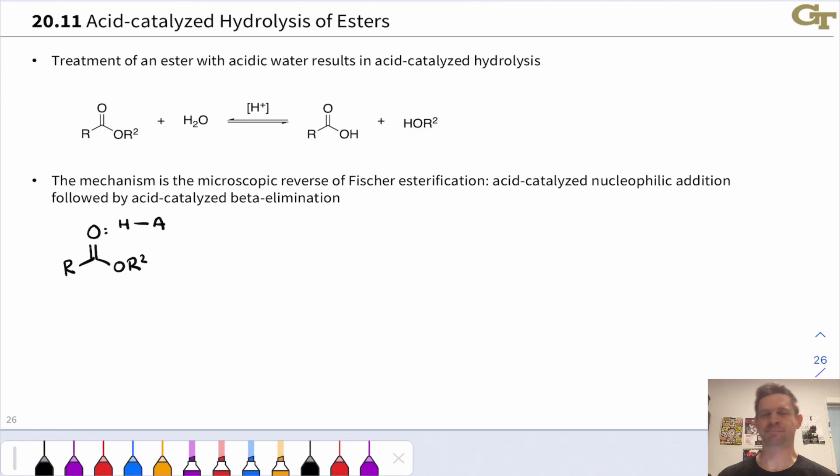If we can make an ester from a carboxylic acid and an alcohol with water as a product, it makes sense that if we use an excess of water and an acid catalyst, we should be able to convert an ester back to the carboxylic acid. This is the idea behind the acid-catalyzed hydrolysis of esters. This reaction is essentially the microscopic reverse of Fischer esterification. It involves all the same elementary steps but occurring in reverse, with reverse electron flow. Notice here that rather than starting with the carboxylic acid and an excess of alcohol, we're starting with an ester and using an excess of water as well as an acid catalyst to generate the carboxylic acid and HOR2. This is a way to get water to displace the alcohol in a nucleophilic acyl substitution reaction, getting us back to a carboxylic acid.